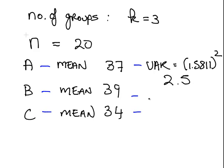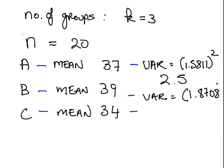The variance of B is 1.8708, I am just moving, squared, and that is 3.5.